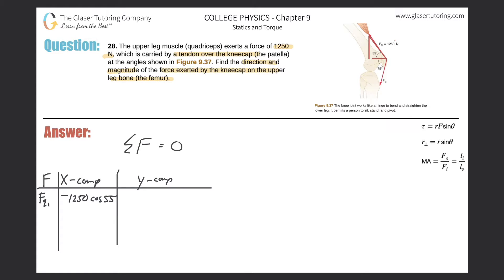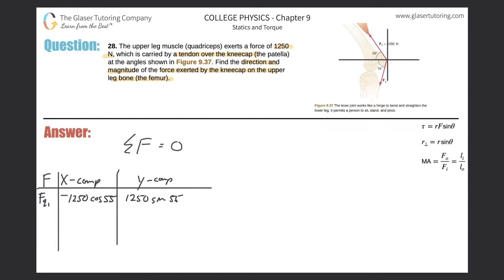If we create the origin at this particular location, the x-component of this vector points in the negative x-direction — that's why it's negative. With the coordinate system established, the y-component uses sine, since this forms a right triangle. That would be sine of 55 degrees, and it's positive because it's pointing upward. So the y-component of FQ1 is 1250 sine of 55.